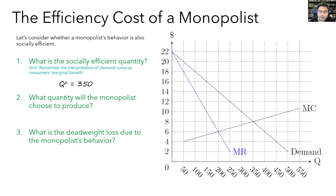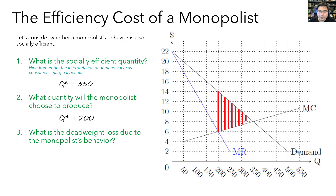The socially efficient quantity was 350, but the monopolist will choose to produce where marginal revenue equals marginal cost — right here — so the quantity would be 200. Since the monopolist produces less than the total surplus maximizing quantity, there is deadweight loss. The loss in surplus equals the loss benefits minus the loss costs, so we add up the lost marginal benefits minus the lost marginal costs, and that's this triangle here. The base of the triangle is 150, the height is 8, so the deadweight loss is one half times 150 times 8, which is 600.